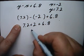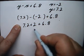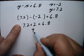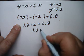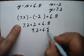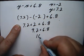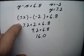7.2 plus 2. 2 is the same thing as 2.0, so this ends up being 9.2 plus 6.8. Now 8 plus 2 is 10. Carry a 1 and I end up with 16.0.